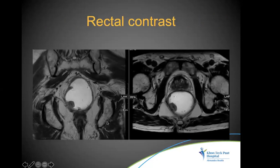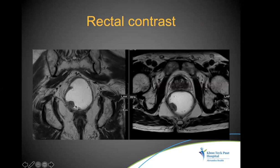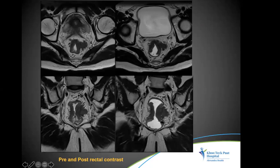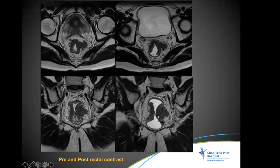Rectal contrast is not routinely recommended but may help pick up small tumors — typically around 60 milliliters of ultrasound gel is pushed into the rectum. However, when rectal contrast is given, the rectum becomes distended and especially in lower or mid rectal tumors, the mesorectal fascia gets compressed, giving a falsely higher T stage. Since the surgeon operates on an empty rectum, rectal contrast is not routinely recommended.